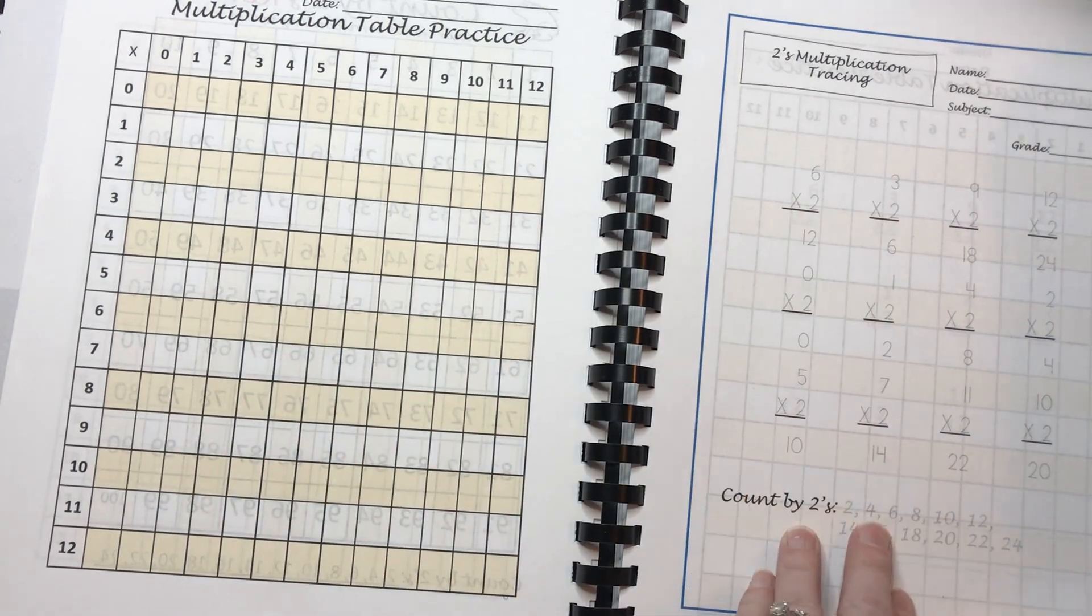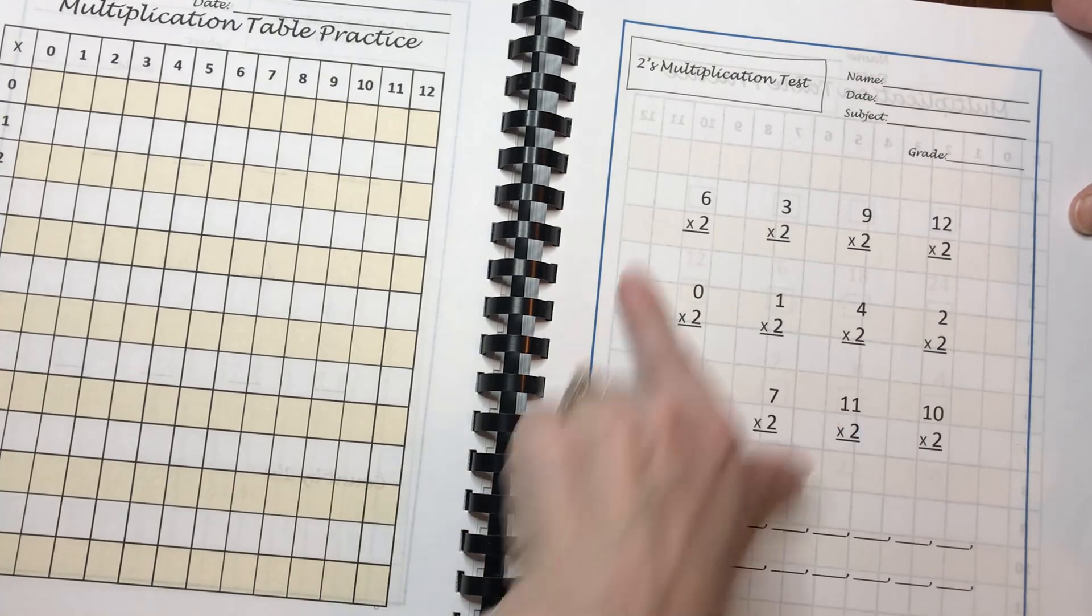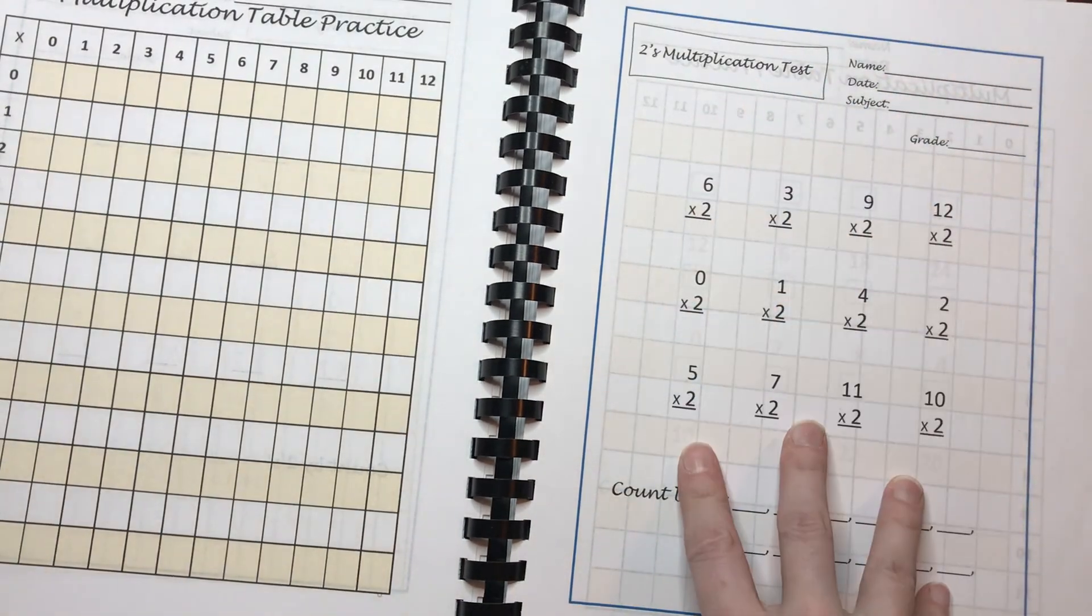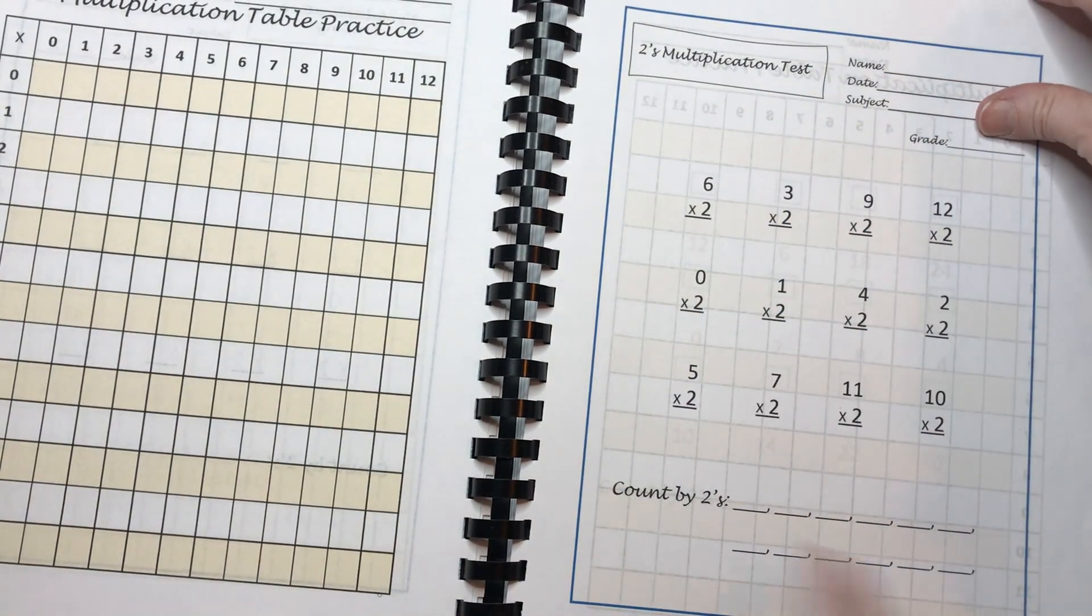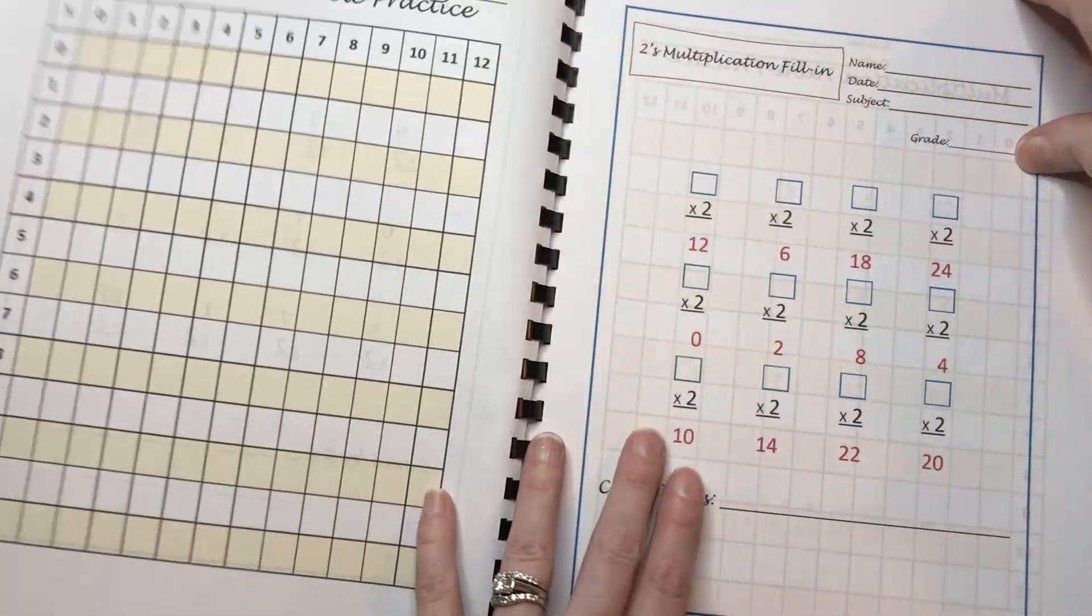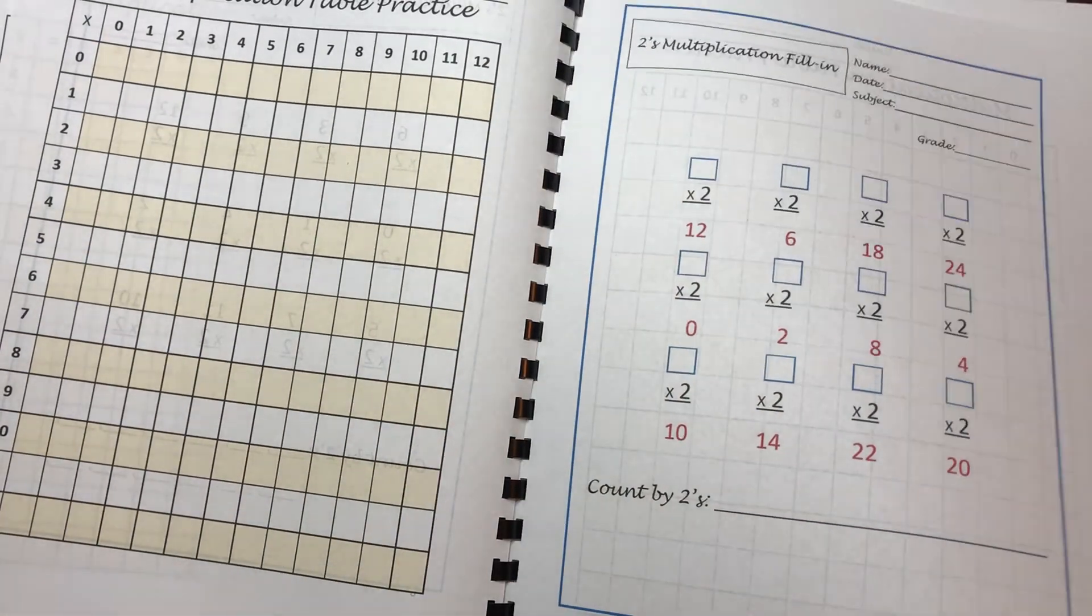Then they're doing some practice and they've got a test on whatever fact family they're working on. They'll answer those and then they'll count by twos and then they'll have a fill-in page.